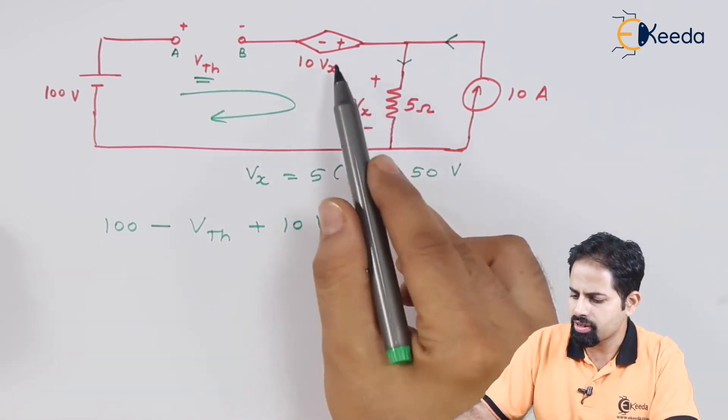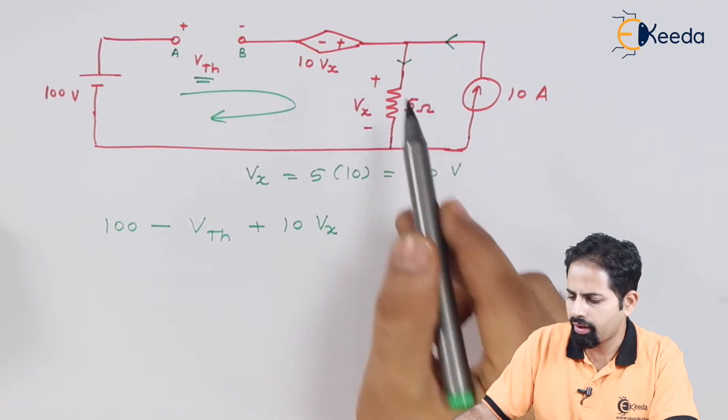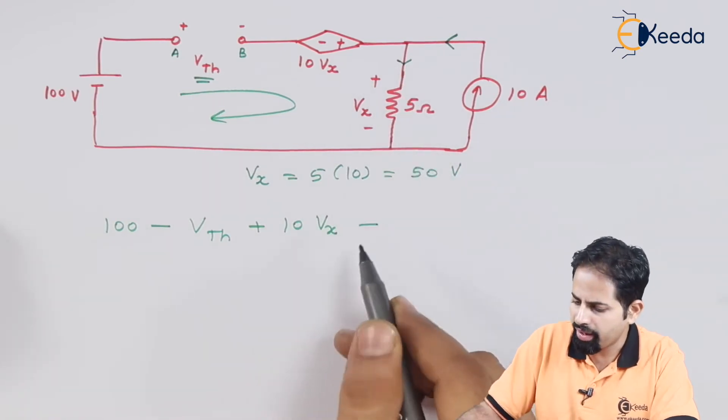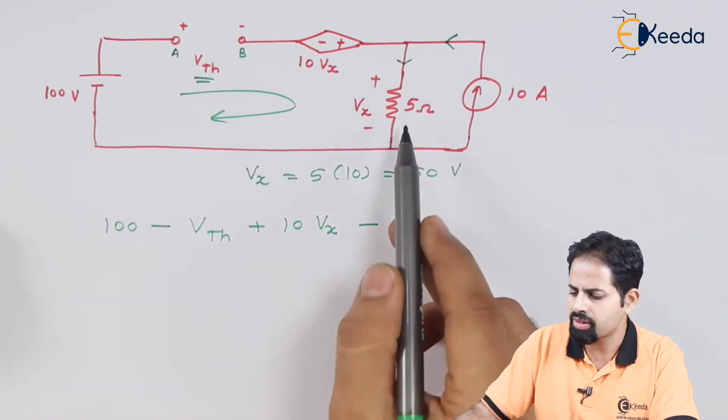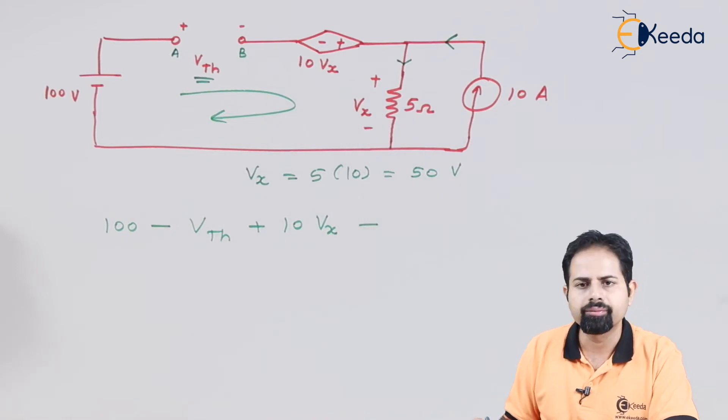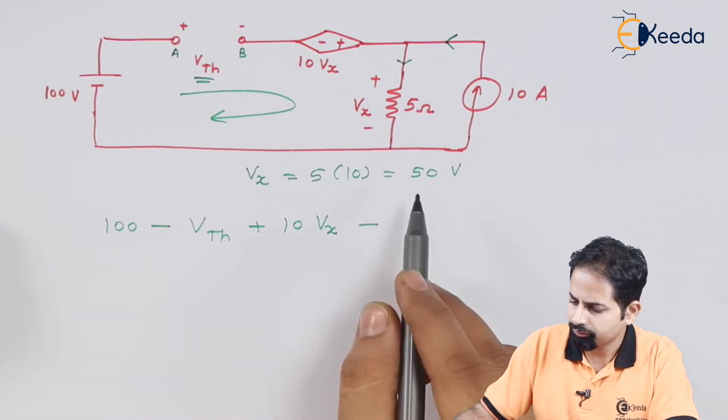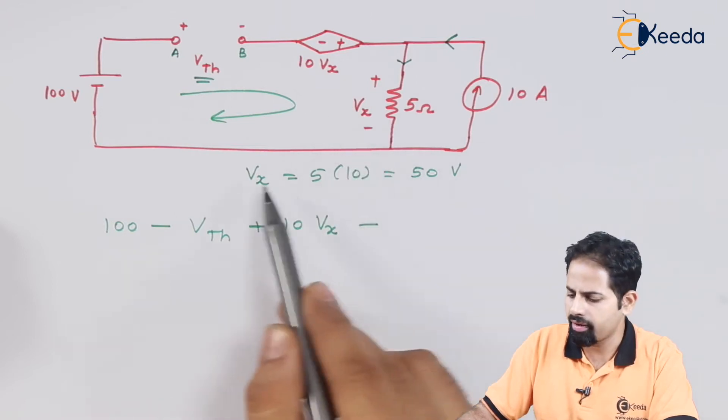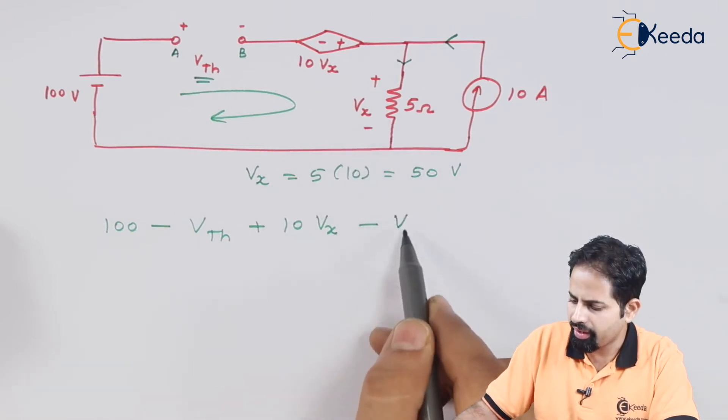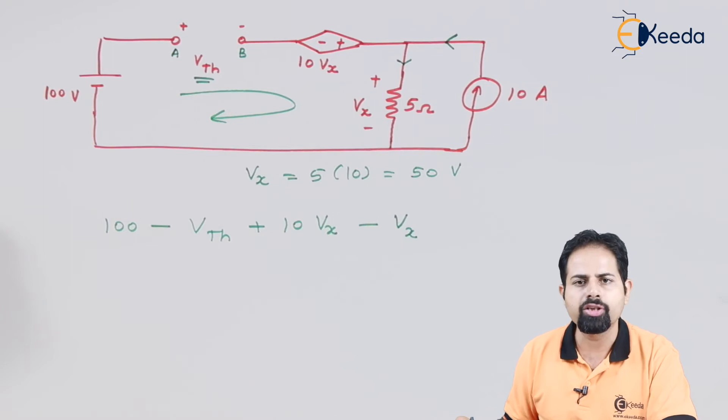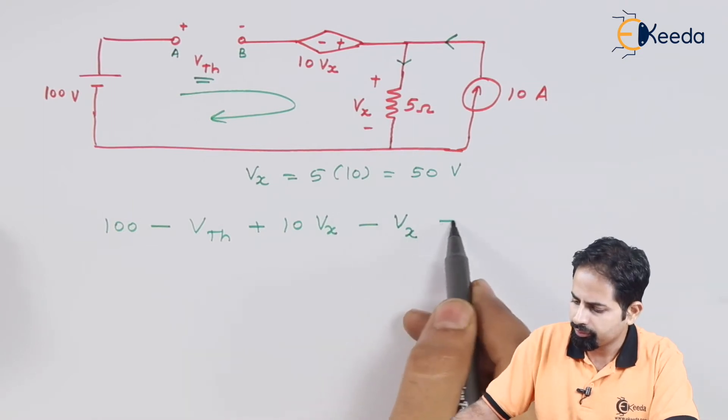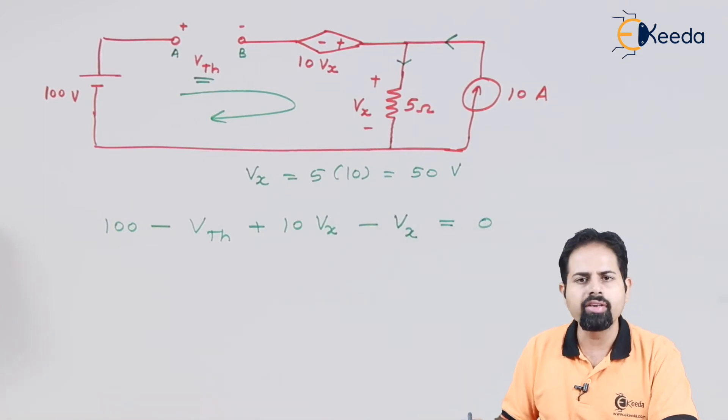Then again negative to positive will be positive. And then for this resistance, we are going and the current direction also is same. So it is going to be minus of voltage is resistance times current. But that voltage is nothing but Vx and this Vx you have got. So we will write directly as Vx plus to minus, so it is negative. And we will solve it now.